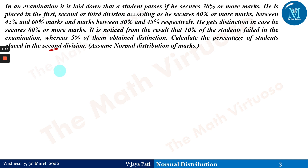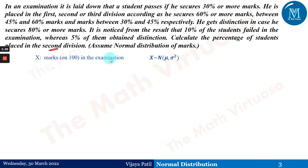We have to find out the percentage of students placed in the second division. We assume the normal distribution for this question. Let X be the marks (out of 100) in the examination, so X follows the normal distribution with mean mu and variance sigma squared.